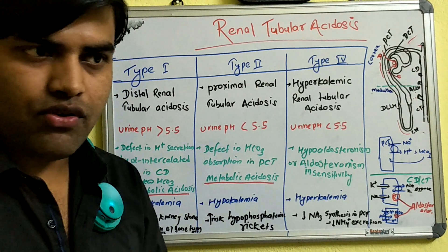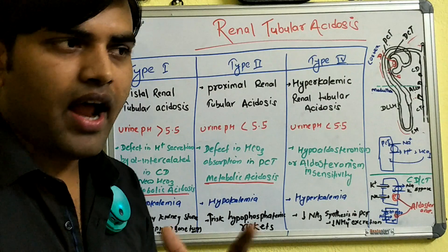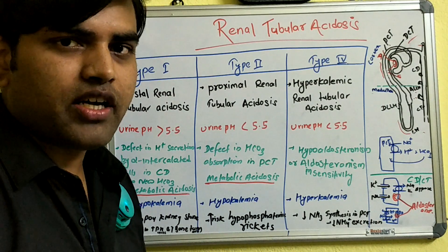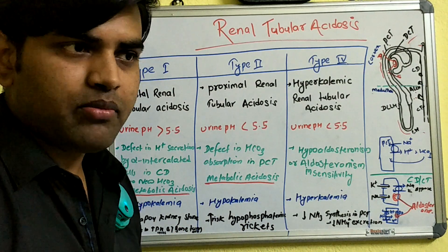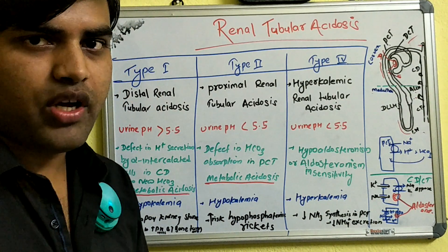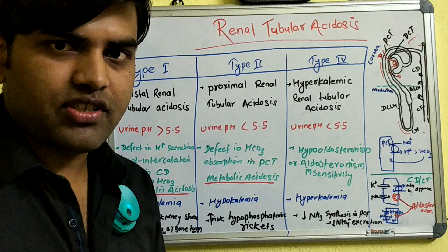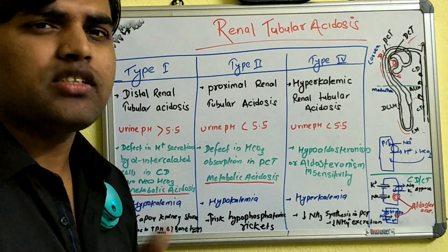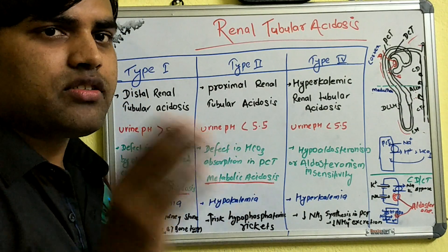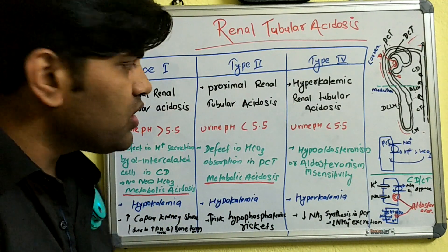Renal tubular acidosis is divided into four types: Type 1, Type 2, Type 3, and Type 4. Type 3 is not usually discussed because it was seen in the 1960s and 70s, where cases presented with high salt intake in children who developed a tubular acidosis intermediate between Type 1 and Type 2, and in patients with carbonic anhydrase deficiency. It is not asked in the present context. So we will focus on Type 1, Type 2, and Type 4.